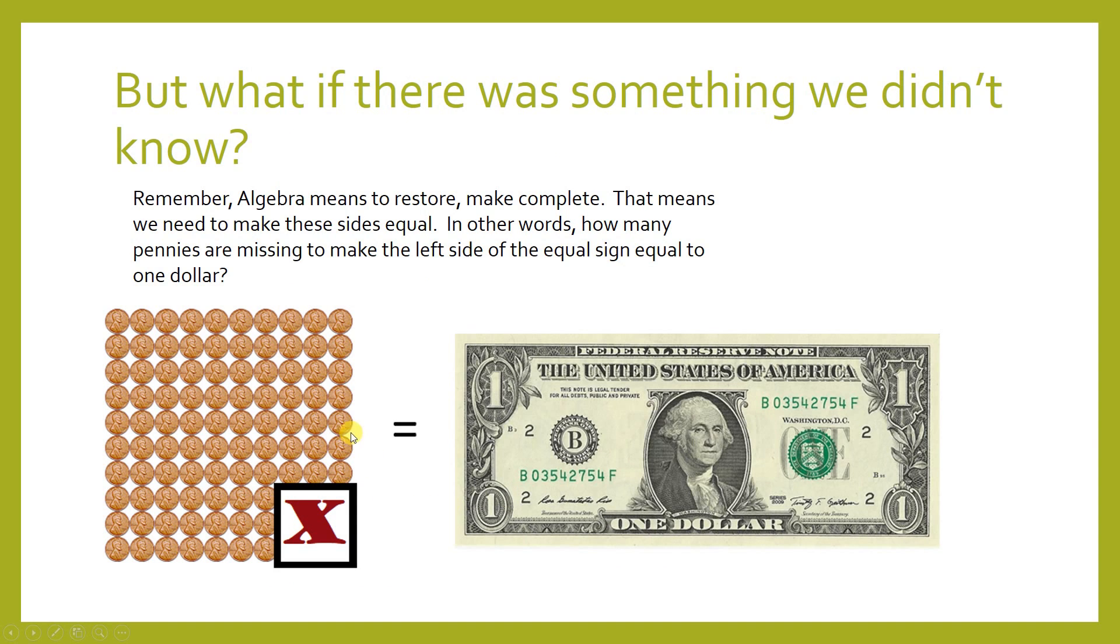Now, suppose that our collection of pennies was missing some, but we didn't know how many. You see, instead of writing out how many pennies are missing so that this collection of pennies on the left would be 100 pennies, which would be equal to the dollar, which is also equal to 100 pennies, we just write the letter X instead. It's a lot easier.